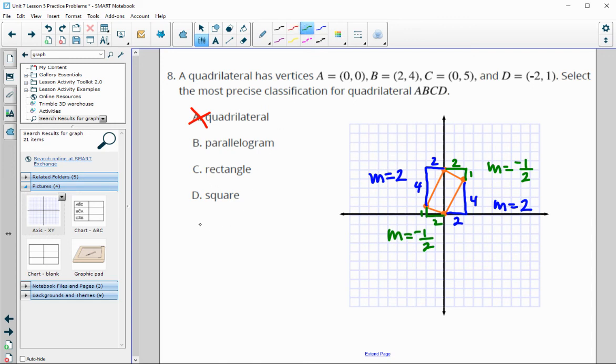Let's check if we've got right angles. One of our slopes is negative 1 half. The other slope is 2. These are opposite reciprocals of each other, which means that we have 90 degree angles. So we definitely have either a rectangle or a square.